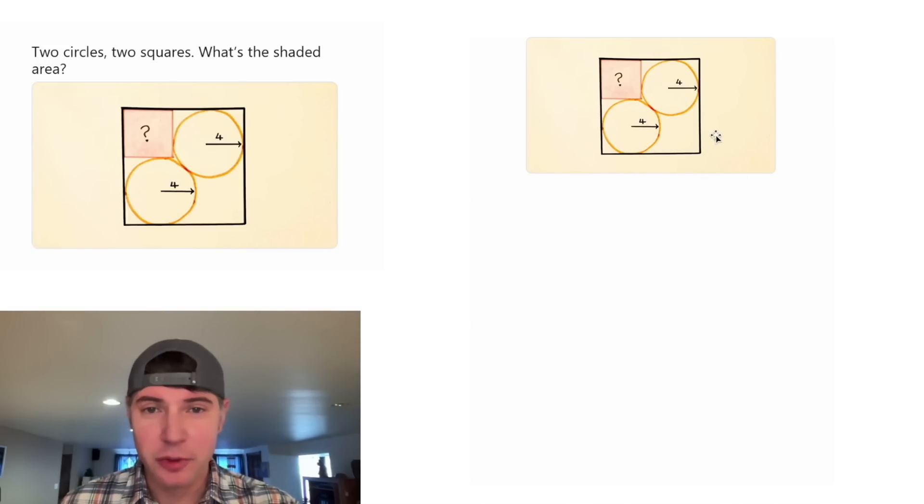So for this one, there are two circles with a radius four and two squares, and it wants to know what's the shaded area, which is the area of this square here. If you wanna try it on your own, pause it right now, because I'm gonna solve it in three, two, one.